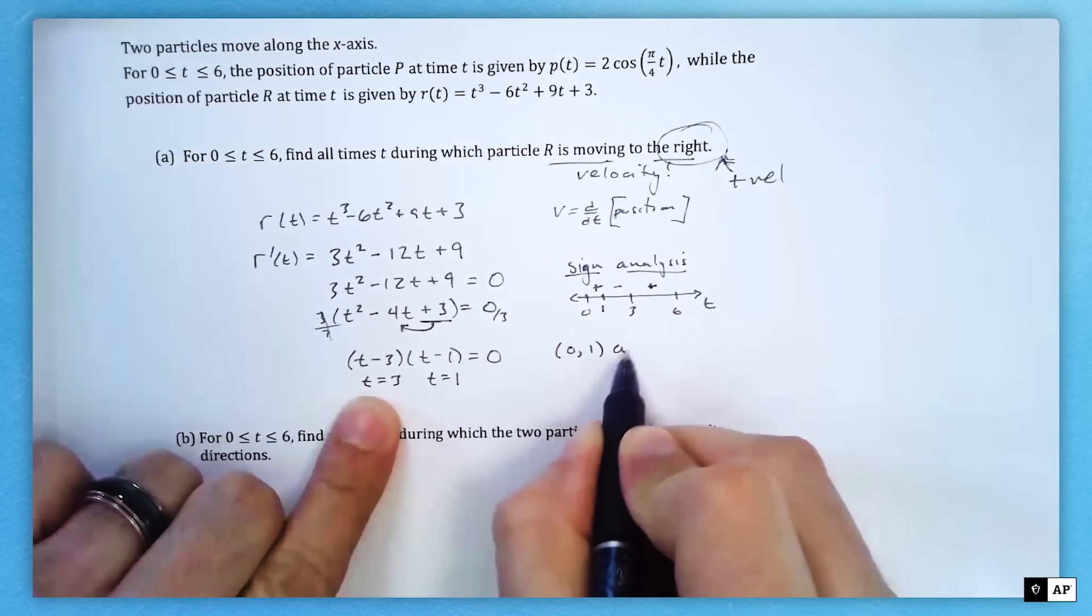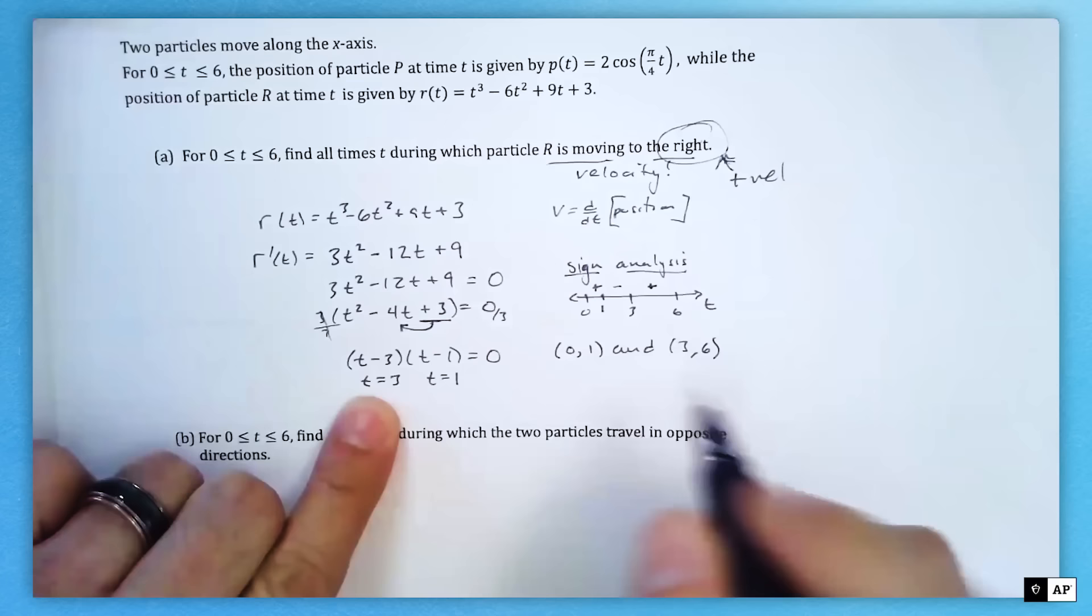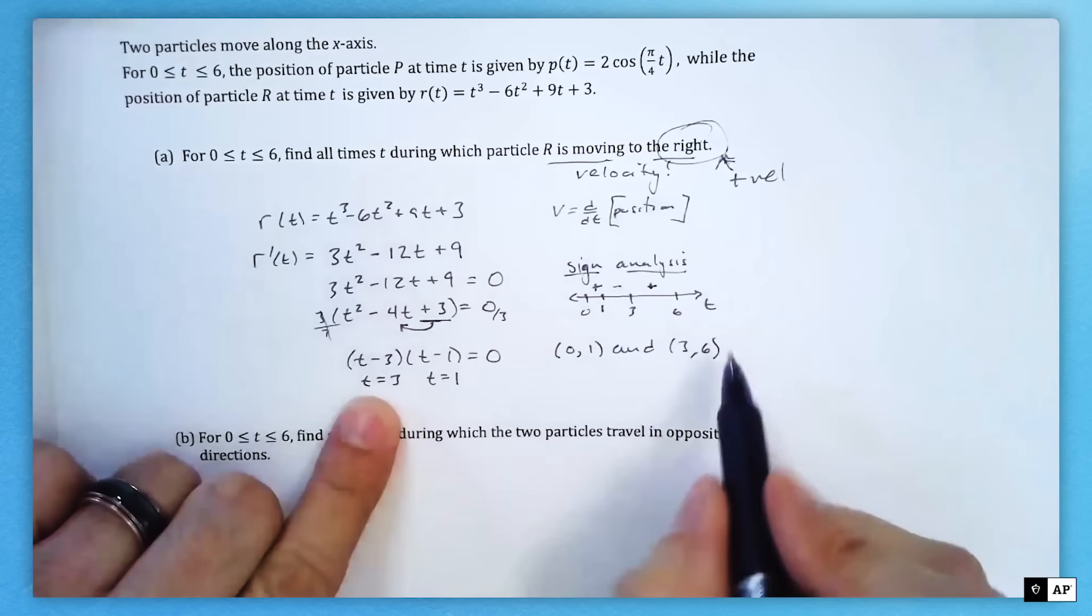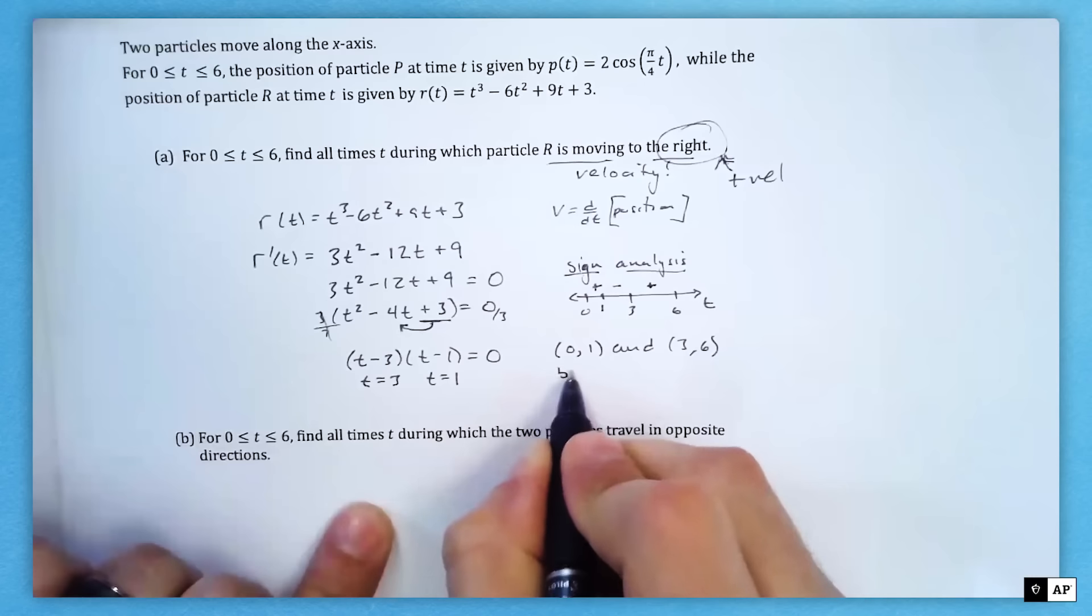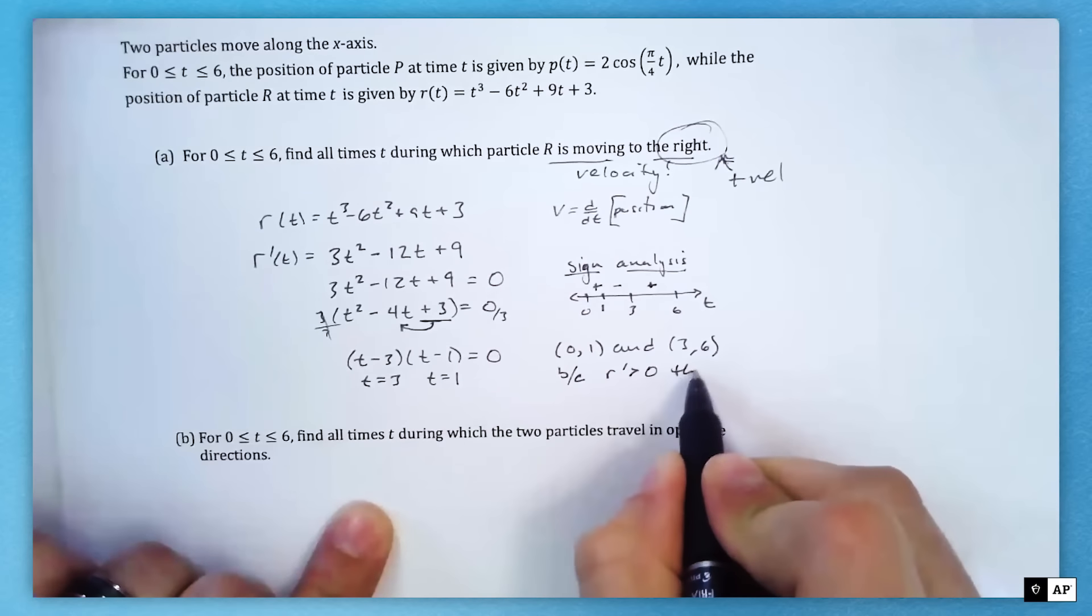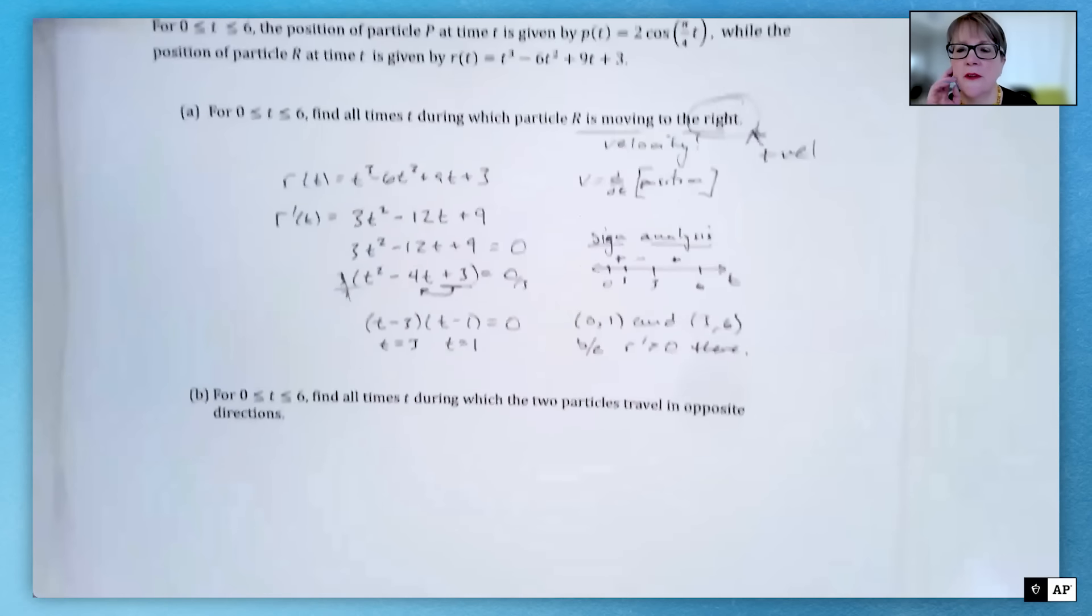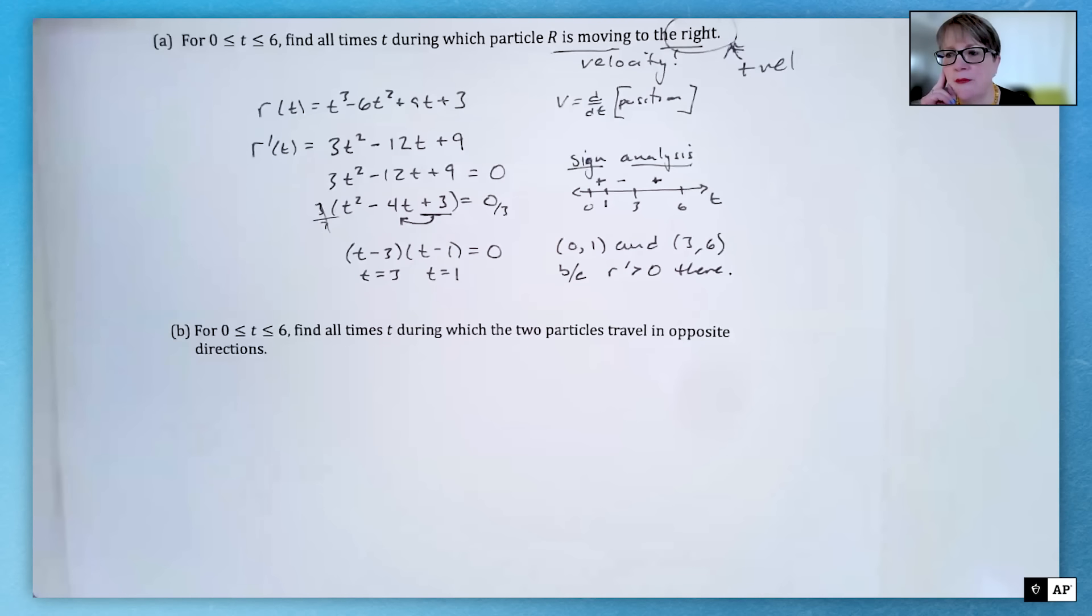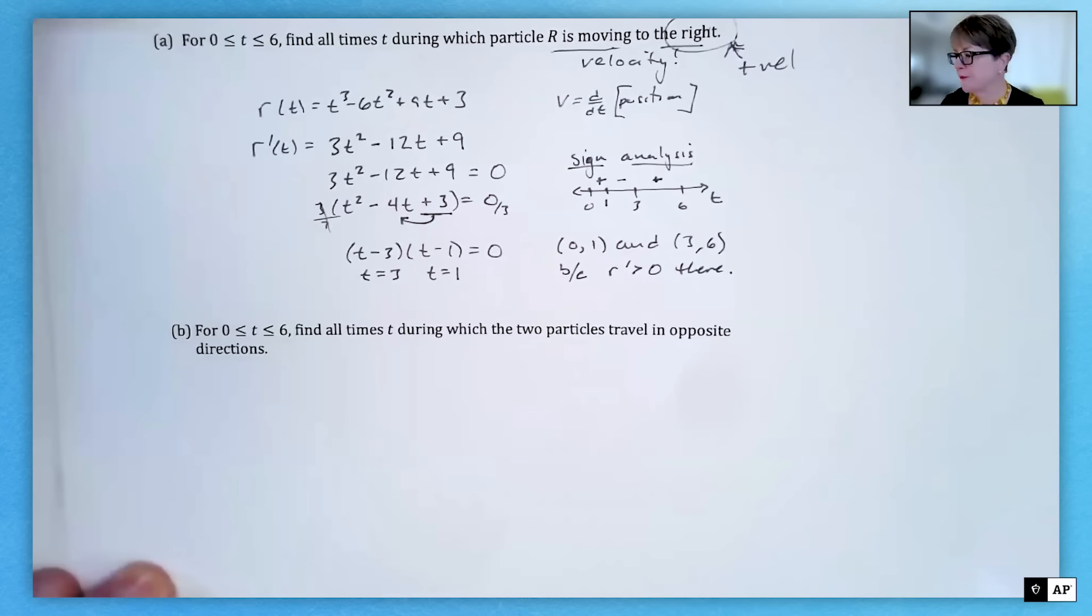Moving to the right on the x-axis is positive velocity, so we are moving to the right on (0,1) and (3,6). They didn't say to give reasoning, but I would go ahead and say because R'(t) is positive. You can't just declare those intervals without any supporting work. Every bit of what you're doing is going to earn certain points, so you definitely want to show how you're getting those intervals even if they don't say justify or explain your reasoning.